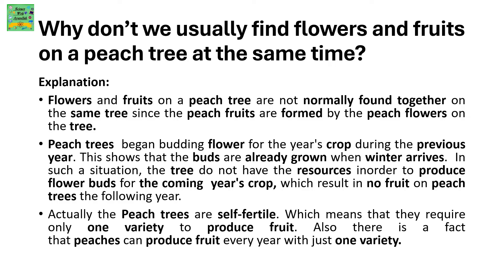Why don't we usually find flowers and fruits on a peach tree at the same time? This is because the peach fruit is made from the peach flower on the same tree. Peach trees begin budding flowers for the year's crops during the previous year, meaning the buds are already grown when winter arrives. In this situation, the tree does not have the resources to produce flower buds for the upcoming year's crops, resulting in no fruit the following year. Peach trees are self-fertile, so they just need one variety to produce fruit every year.